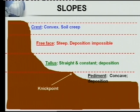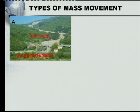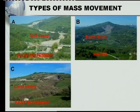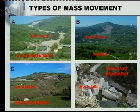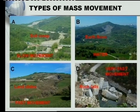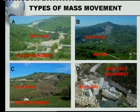Mass movement refers to the movement of material down a slope. There are four different types — some slow, some fast, some very fast. The first type is soil creep, which is a very slow movement of soil coming down the slope.